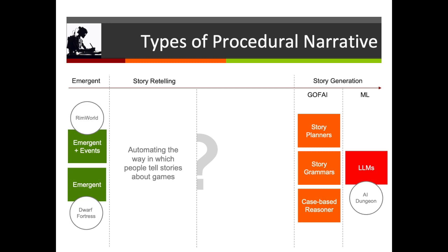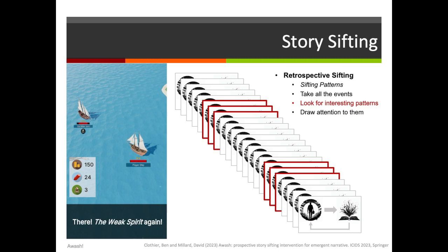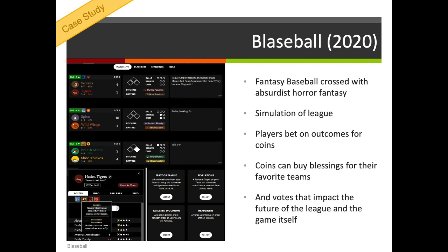What we can do in terms of procedural narrative is think about how we might automate the retelling of stories. That's a very lightweight way of starting to intervene in emergent narratives, to bring in some sense of direction, but without being too forceful about it, without overpowering the emergent qualities of the system. One approach is to do story sifting — this is where you take a simulation, look at all the events that occur over time, define a number of sifting patterns which are combinations of events that are narratively interesting, and then look for those patterns in the log of the simulation and draw attention to them.